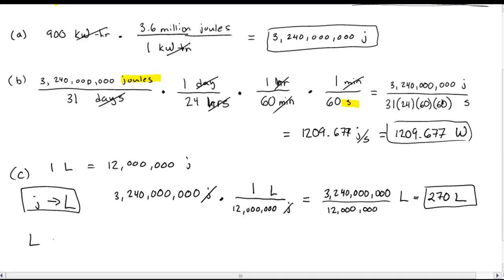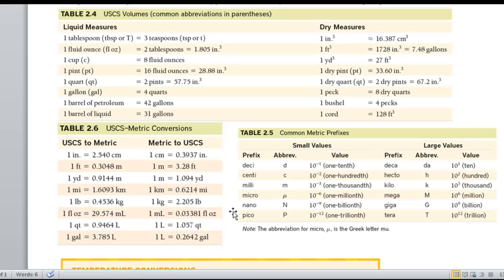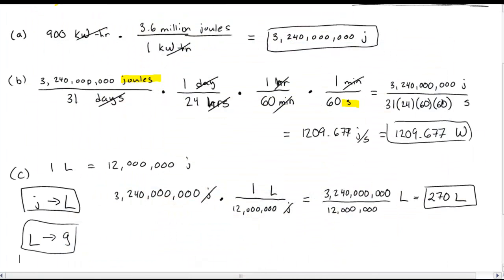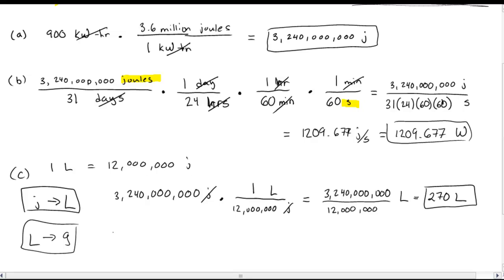But they also want the answer into gallons, so why don't I take my liters and just convert them right to gallons. So I'll need a conversion factor. So let's take my 270 liters and convert them to gallons. And I'll need a conversion factor for that. 1 gallon is 3.785 liters. I'll use that conversion factor. So let's see here. I have 270 liters. Liters are on the bottom, gallons on top. That conversion factor was 1 gallon is 3.785 liters. Liters cancel. So that's 270 over 3.785 gallons. So if I work that out, that's 71.33 gallons. Whew.